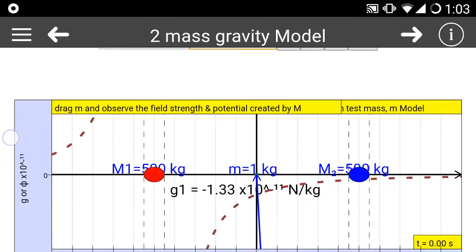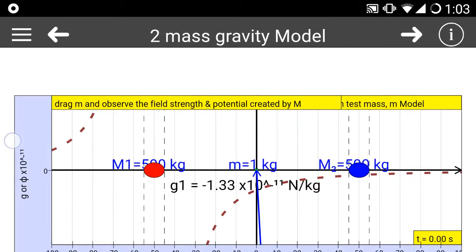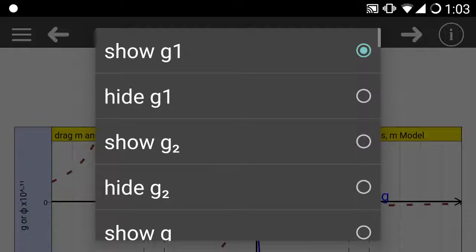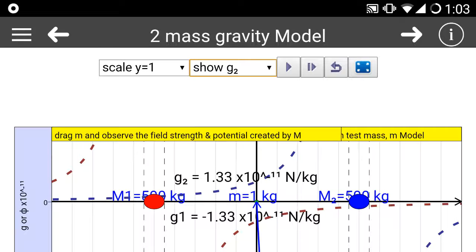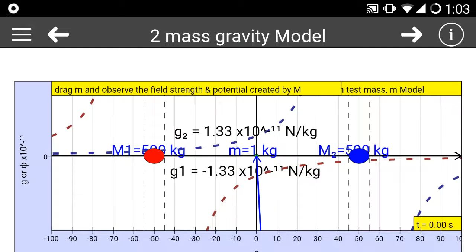It will show up as a line in dotted line. What about the gravitational field strength of mass 2? You can see that as you dynamically move M1 and M2, it will vary accordingly to the positions.